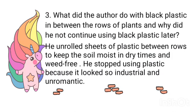Next question: what did the author do with black plastic in between the rows of plants, and why did he stop using black plastic later? He unrolled sheets of plastic between rows to keep the soil moist in dry times and weed-free. He stopped using plastic because it looked too industrial and unromantic.